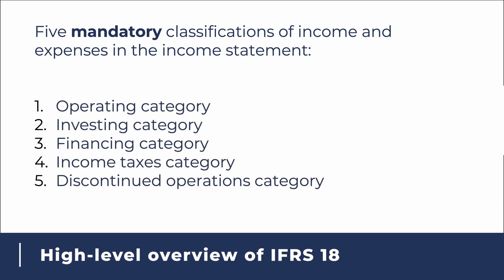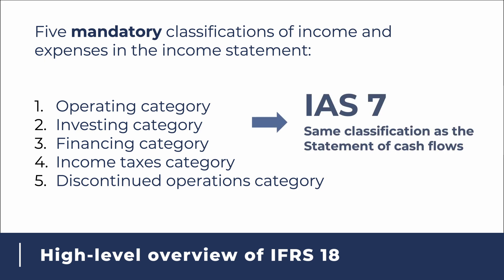The five categories are: the operating category, the investing category, the financing category, the income taxes category, and the discontinued operations category. The first three are new classifications of income and expenses introduced in IFRS 18, but they may already be familiar to you, because these are the same terms used in IAS 7, Statement of Cash Flows, to classify different types of cash flows.